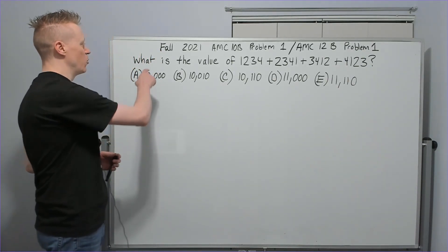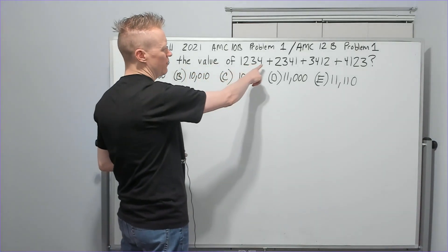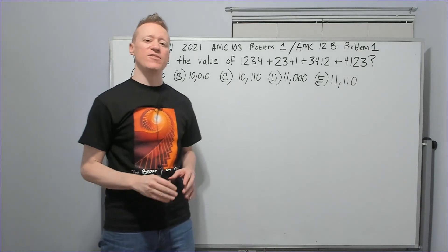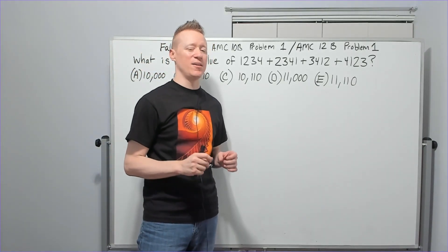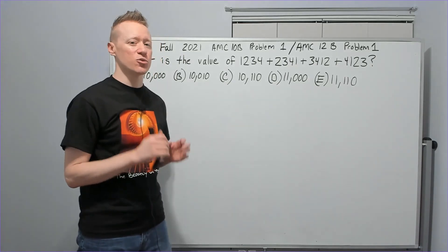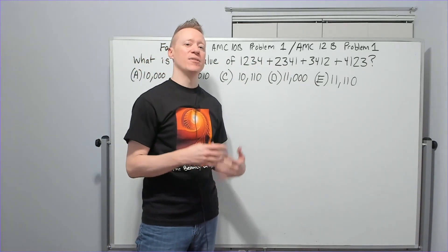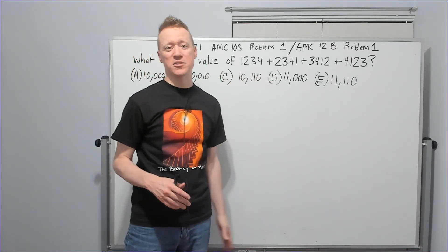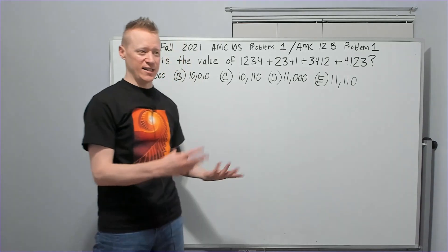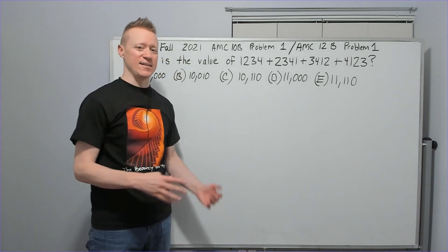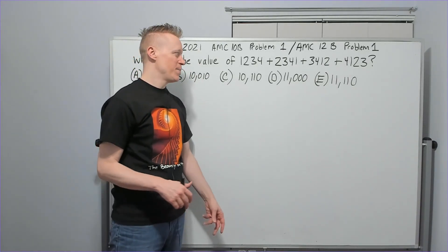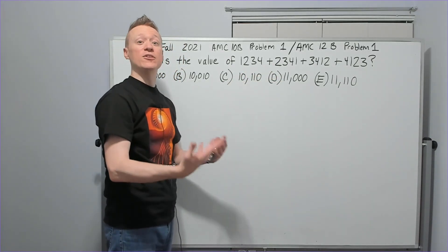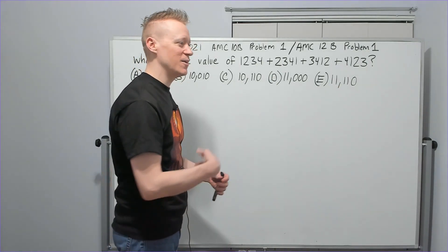Let's get started on this test from problem number one. What is the value of 1234 + 2341 + 3412 + 4123? Your ability to make observations and capitalize on them as quickly as possible is crucial to how fast you can run through the first few problems.